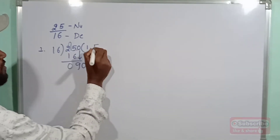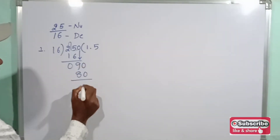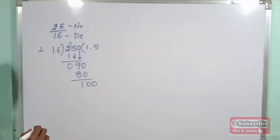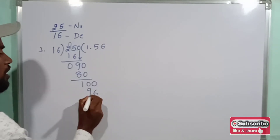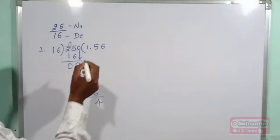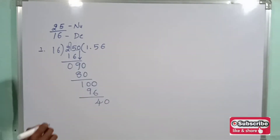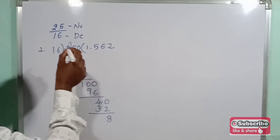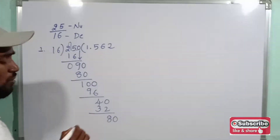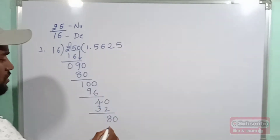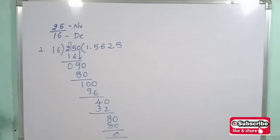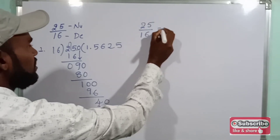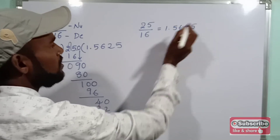Now 16 times 5 is 80. Subtract: 90 minus 80 is 10. Since we already placed the decimal point, we keep a 0, making it 100. Now 16 times 6 is 96. Subtract: 100 minus 96 is 4. Bring down a 0: 40. Now 16 times 2 is 32. Subtract: 40 minus 32 is 8. Bring down a 0: 80. Now 16 times 5 is 80. Subtract: 80 minus 80 is 0. The remainder is 0.